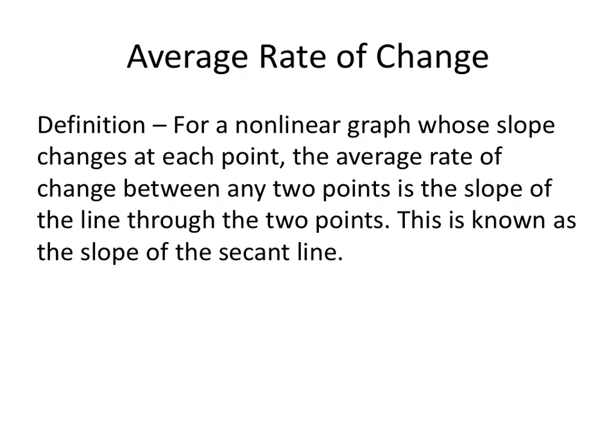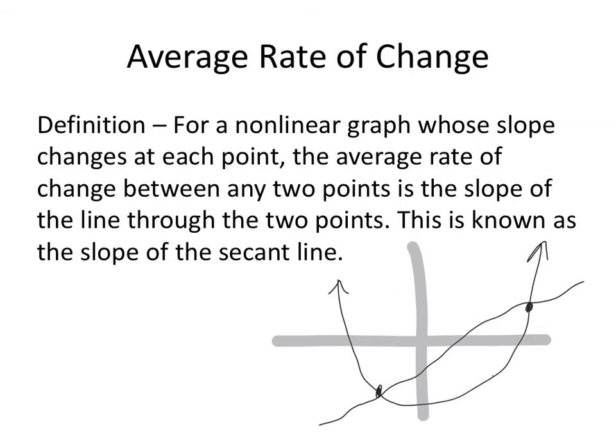Average rate of change. For a nonlinear graph, whose slope changes at each point, the average rate of change between any two points is the slope of the line through the two points. This is known as the slope of the secant line. If we have any graph, some kind of parabola, the average rate of change between any two points is the slope of the line through the two points. So I can find the slope of the lines here. And I might find the slope of the line between these two points, and that's a different average rate of change. So it has to be dependent on any two points. That determines our particular average rate of change. So the interval matters.